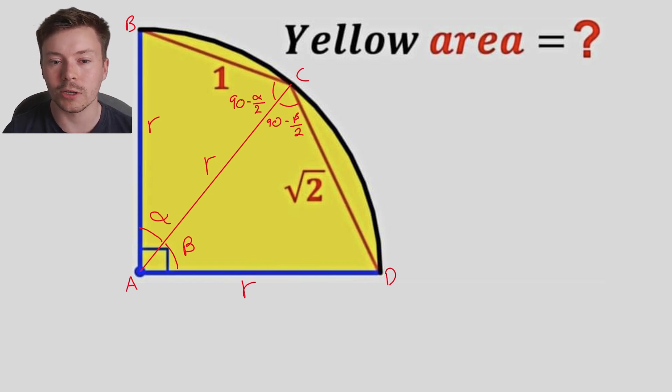And the reason that is, is because I've got 180 degrees in a triangle, I take away alpha from it, and then I split that into 2 because it's isosceles. So 180 split into 2 is 90, alpha split into 2 is alpha over 2, and it's exactly the same logic for the other angle.